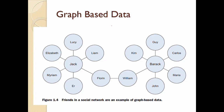Graph-based data example: Jack is person 1, Barack is person 1. Jack's friends are Elizabeth, Lucy, Liam, Maryam, and Florine. Florine's friend is William. So William is not a direct friend of Jack. If you want to add a friend to Jack — Kim, Guy, Carlos, Barack, Mary, or John — Florine and William are not friends of Jack, but there is a possibility they can become friends.